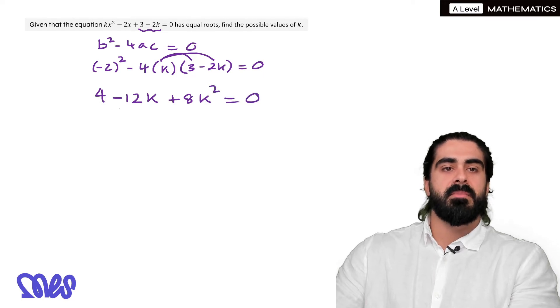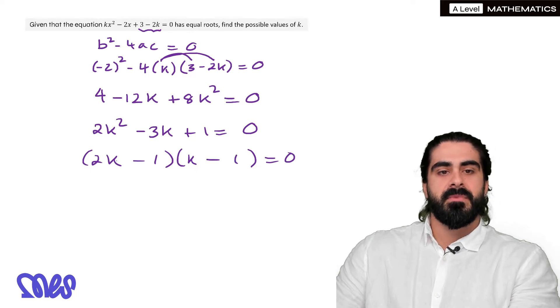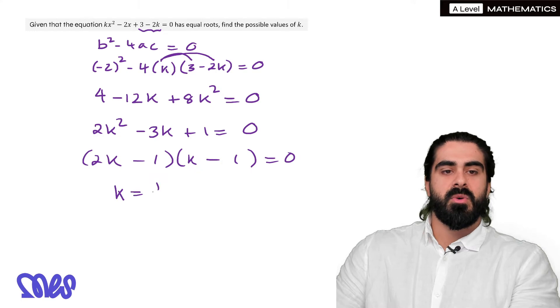Now we can divide everything by 4 and then I'm going to write the k squared first so we can factorize. Here 2k, k, we're going to have 1 and 1 and both of them have to be minus so we get k is 1 over 2 and k equals 1.